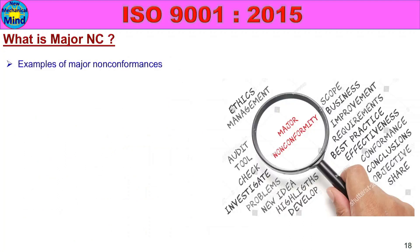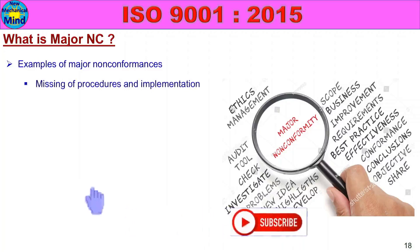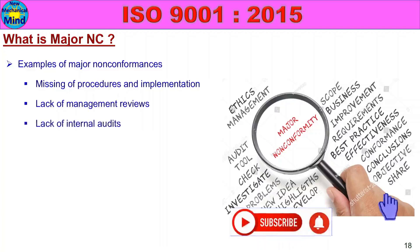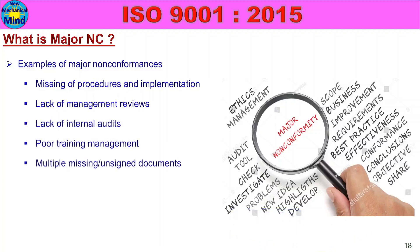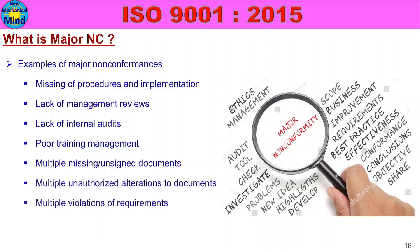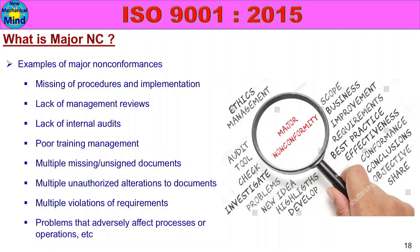Examples of major non-conformances include: missing procedures and implementation, lack of management reviews, lack of internal audits, poor training management, multiple missing or unsigned documents, multiple unauthorized alterations to documents, multiple violations of requirements, and problems that adversely affect processes or operations.